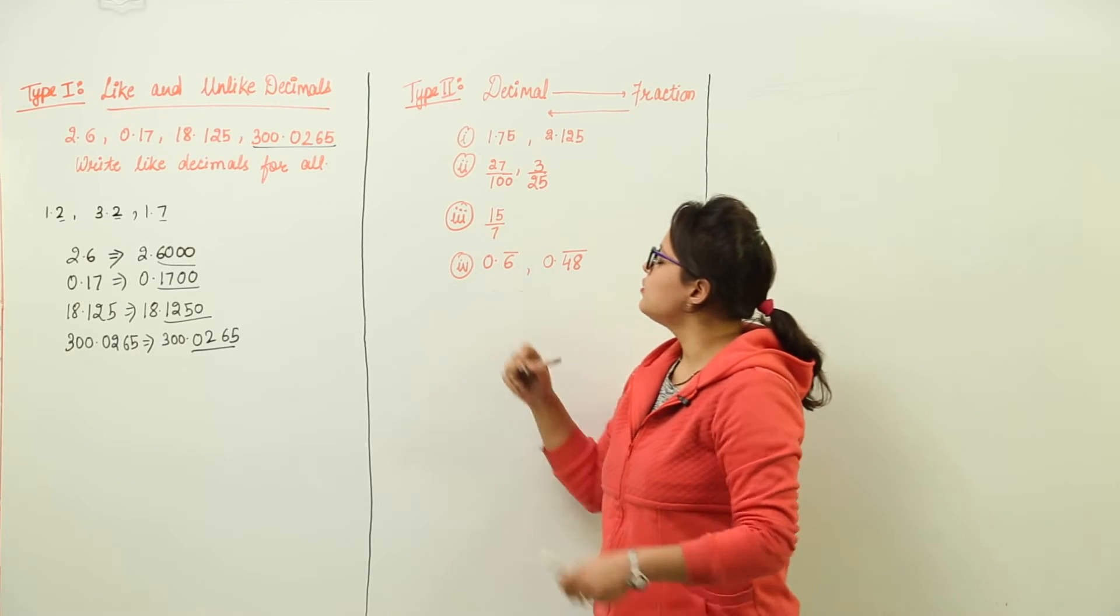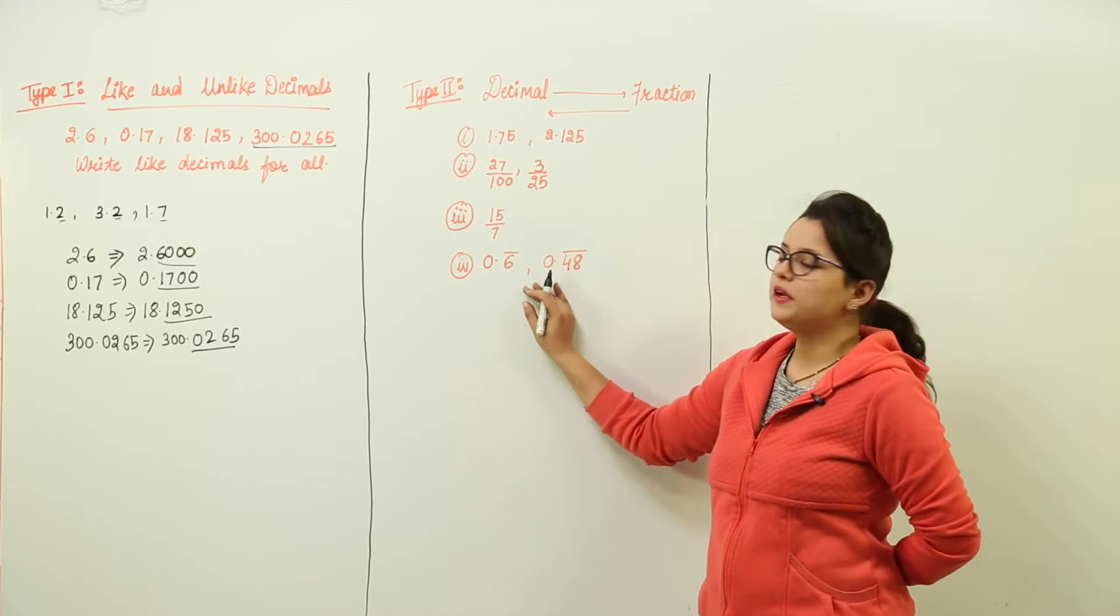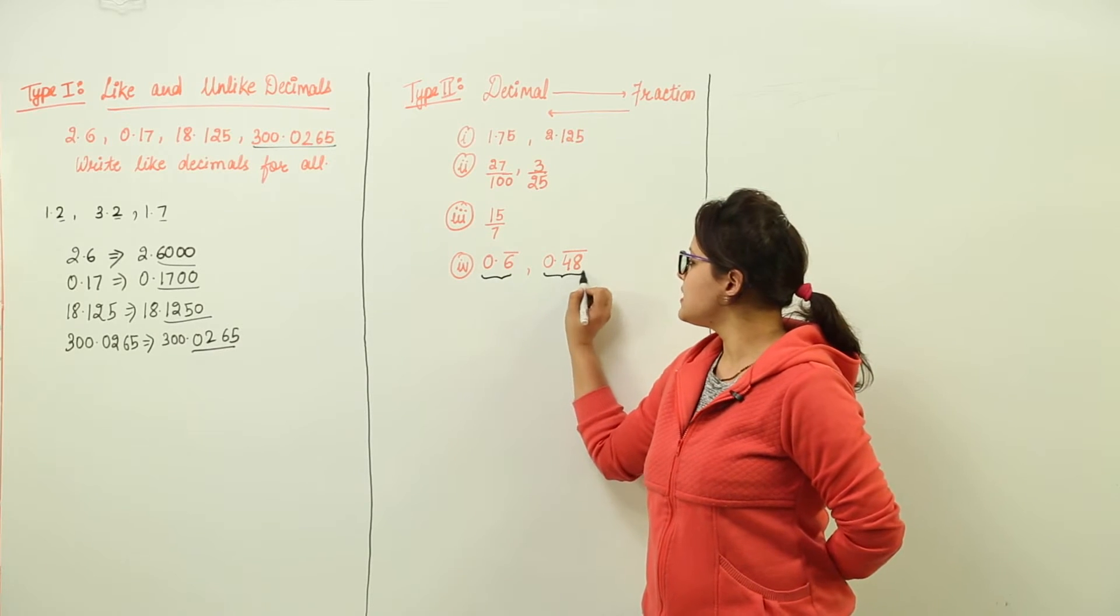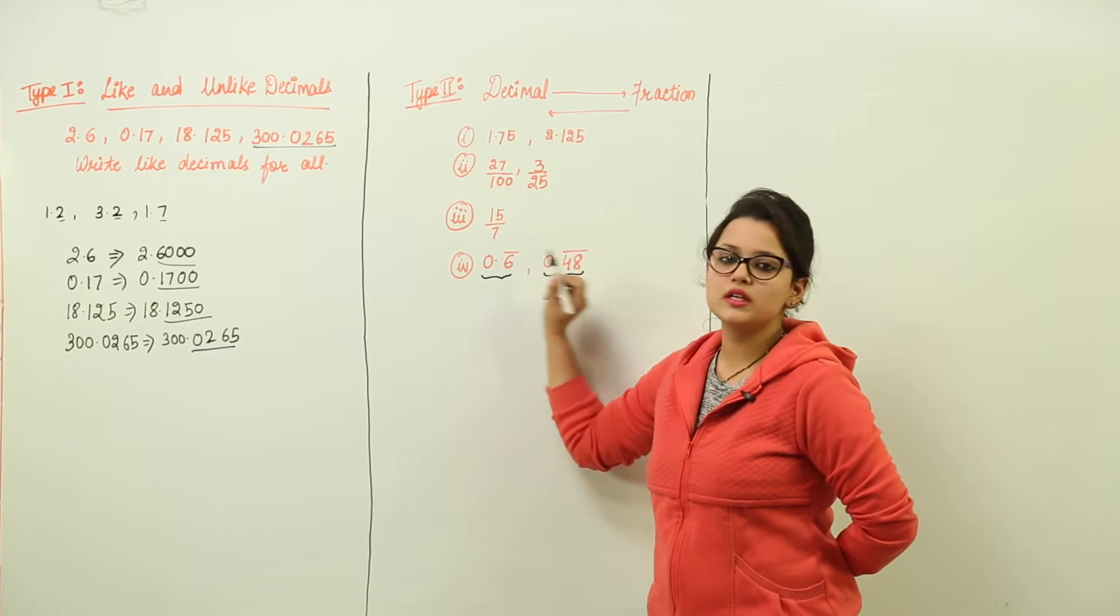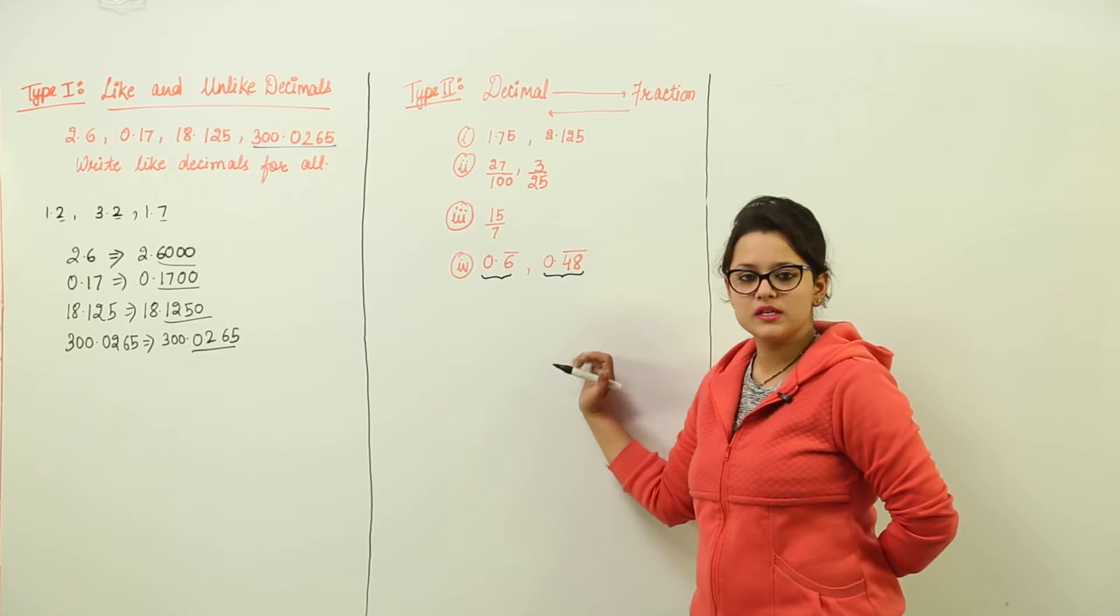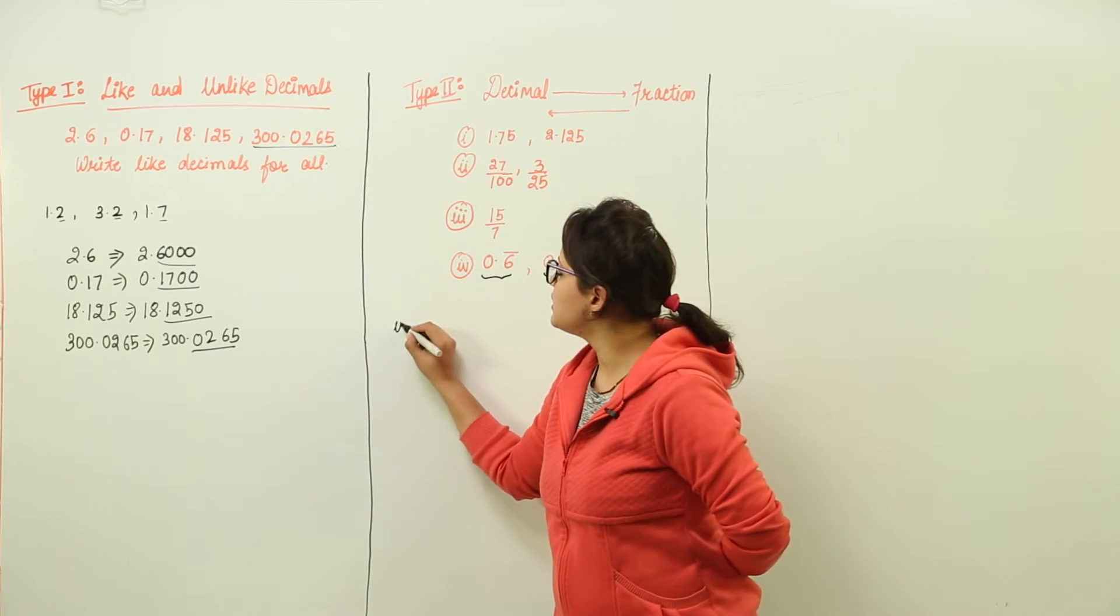The fourth part is converting decimals into fractions. Please pay attention to these decimals. These decimals have a bar on their digits. The bar represents that these digits are getting repeated.